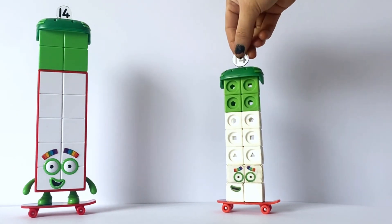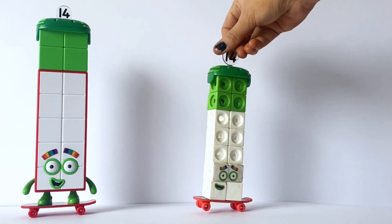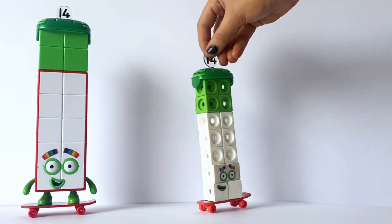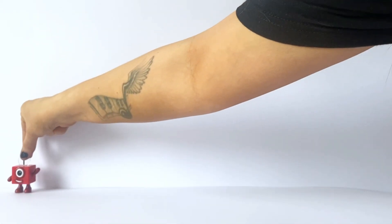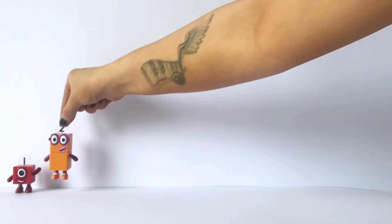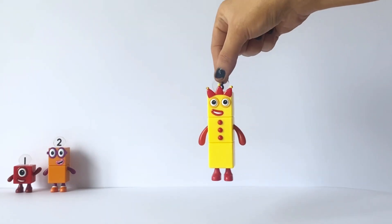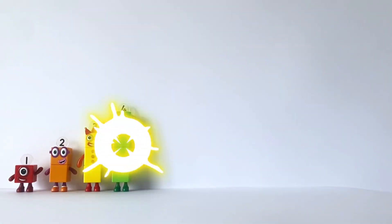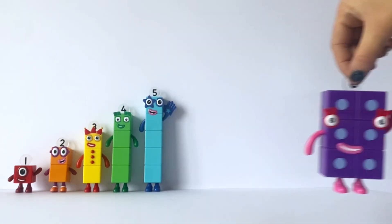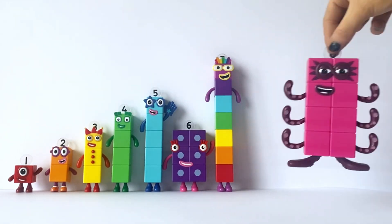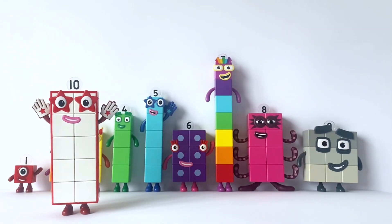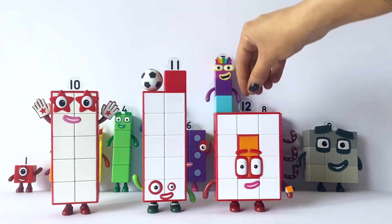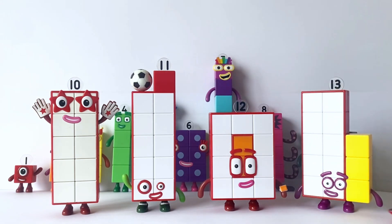So that was it for our new NumberBlock action figures. So let's now count from 1 to 14 with all of the NumberBlock action figures. 1, 2, 3, 4, 5, 6, 7, 8, 9, 10, 11, 12, 13, 14.